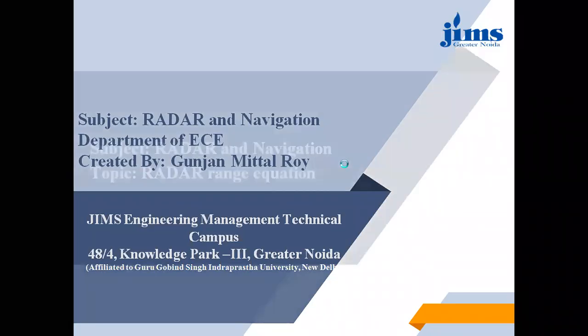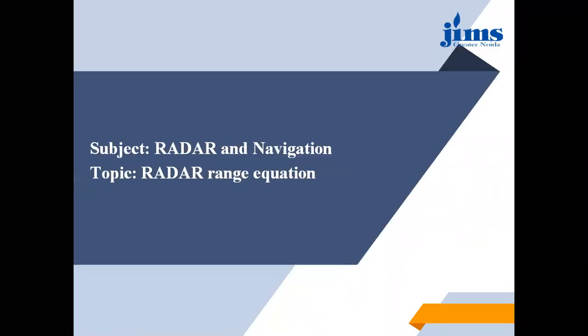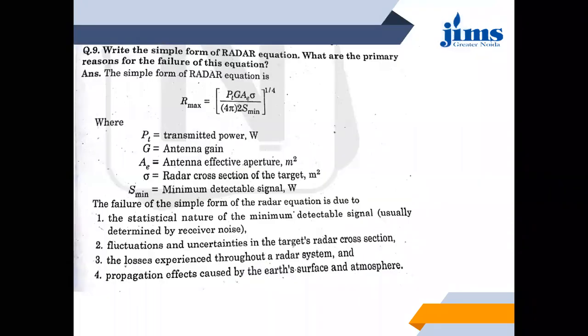The next topic we are going to discuss is the radar range equation. We already discussed it at the beginning of Unit 1, but it is also asked in Unit 3. The question asks you to write the simple radar range equation and the primary reasons for the failure of this equation. Mainly we have to mention what are the reasons of failure, where is the failure, and why is the failure of this equation.